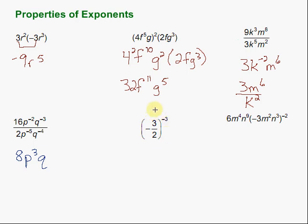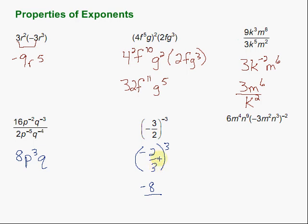Now this one has a negative power on the outside. We need to get rid of that negative power by flipping the fraction. We have negative 3 over 2 on the inside, and that's going to be flipped to become negative 2 over 3. That's still to the third power — the positive third power, since we flipped it. Then we take each part of that fraction to the third power. Negative 2 to the third power: negative 2 times negative 2 is 4, times negative 2 again is negative 8. Over 3 to the third power: 3 times 3 is 9, times 3 again is 27. So the result is negative 8 over 27.